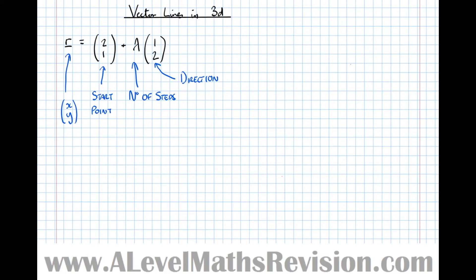So what this is saying is that any point on the line R can be obtained by starting at (2,1) and walking this number of steps in this direction.